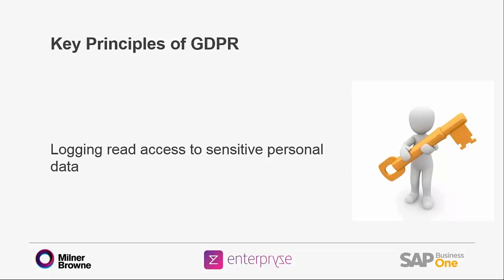The next principle is logging read access to sensitive personal data. It is always good practice to ensure that general authorizations are set correctly for all users of your system. I have seen occasions where for speed all users have been set as super users or given full authorizations. Now because of GDPR there is an added incentive to make sure that users are only given access to the data they need to do their jobs. Going forward in SAP there will be a special log to check who has been accessing certain predefined sensitive personal data, allowing the data controller to review access against rights and make any necessary corrections.